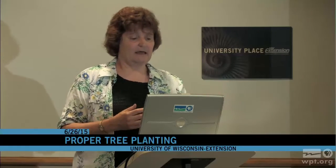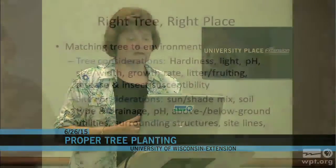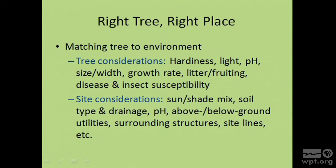Then, looking at the site: once you've chosen a tree, consider the soil type and drainage, pH, above-ground and below-ground utilities. Before you buy the tree, call Diggers Hotline and have them confirm there isn't a utility line where you want to plant—it's really annoying to bring the tree home and discover you can't plant it where you planned. Also consider surrounding structures: is your tree going to grow into a garage, your house, or a nearby fence?